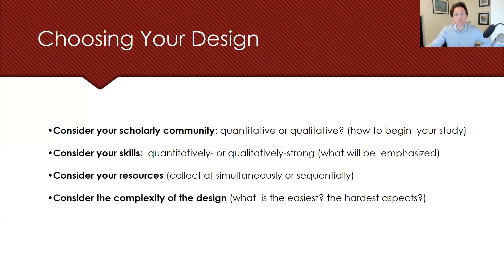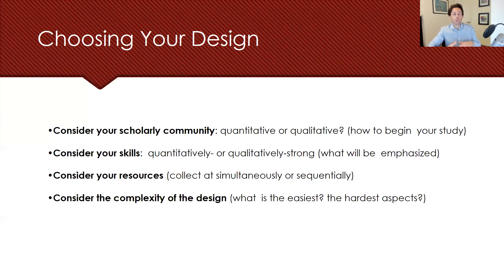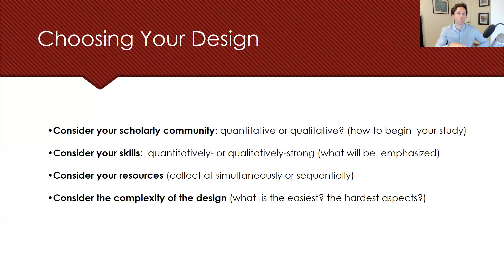The second consideration is your particular skill base — are you more savvy in quantitative or qualitative methods? We all have room to grow, but we typically lean one way. The third is considering your resources: if there's a time constraint, you may need to collect data concurrently; with more time, sequential collection may better optimize outcomes. Fourth is the complexity of the design — what would permit you to succeed? You need to fully understand it and align it directly to your research questions and population.